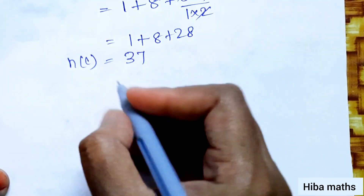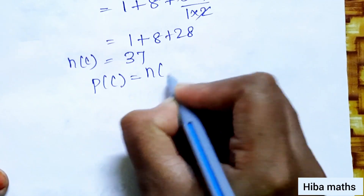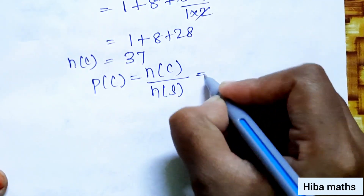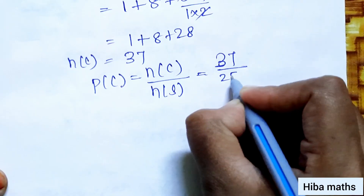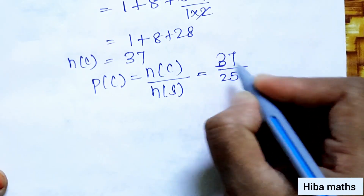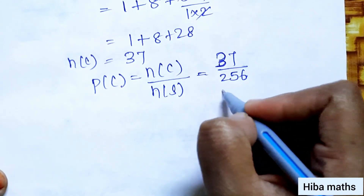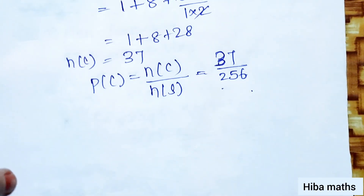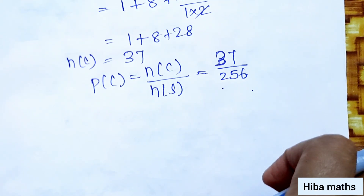So the final answers are: P(A) equals 7/64 for exactly 2 tails, P(B) equals 247/256 for at least 2 tails, and P(C) equals 37/256 for at most 2 tails. Thank you so much for watching.